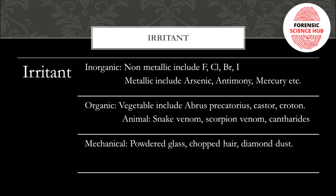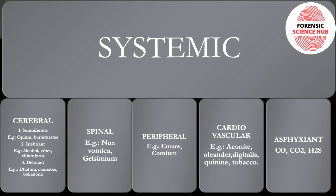Organic irritants can be vegetable or plant poisons, with examples like Abrus precatorius, castor, croton, and Ricinus communis. Then come animal irritants, which include snake venom, scorpion, and cantharides. Mechanical irritants include powdered glass, chopped hair, and diamond dust. All these are examples of irritant poisons.